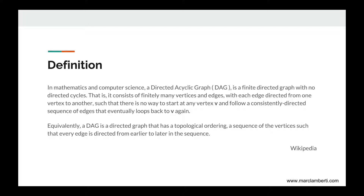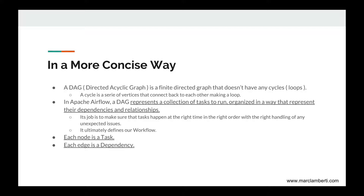Equivalently, a DAG is a directed graph that has a topological ordering — a sequence of the vertices such that every edge is directed from earlier to later in the sequence. In a more concise way, a DAG is a finite directed graph that doesn't have any cycles or loops. A cycle is a series of vertices that connect back to each other making a loop. In Apache Airflow, a DAG represents a collection of tasks to run, organized in a way that represents their dependencies and relationships.